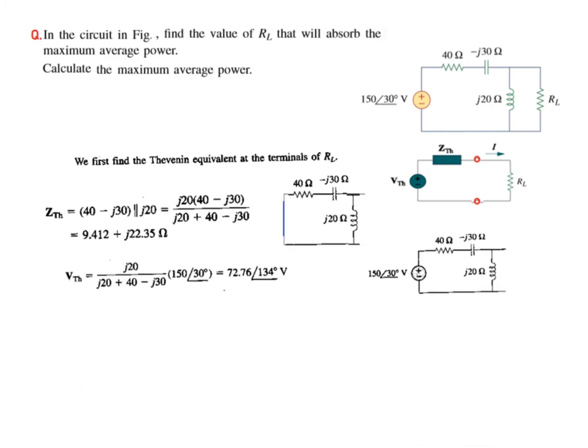We need to find V_Thevenin from the circuit. V_Thevenin is the voltage across j20. By voltage divider rule, total voltage divided by total impedance, multiplied by the impedance across which we are finding the voltage. So multiply by j20, and solving, this is our V_Thevenin: 72.76 angle 134 volts.